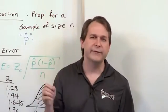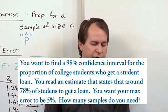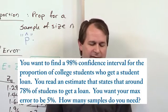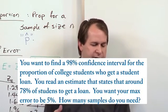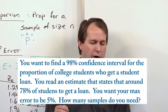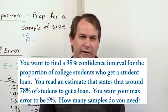The question is, you want to find a 98% confidence interval for the proportion of college students who get a student loan. You read estimates that around 78% do get a loan, but you want your max error to be around 5% for this confidence interval that you're doing. How many samples do you need?